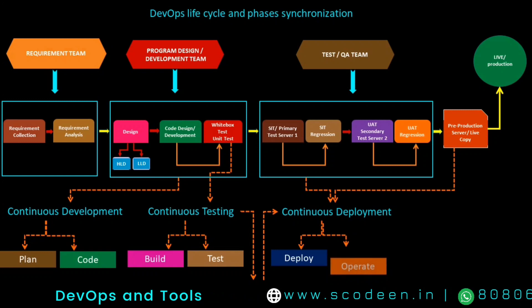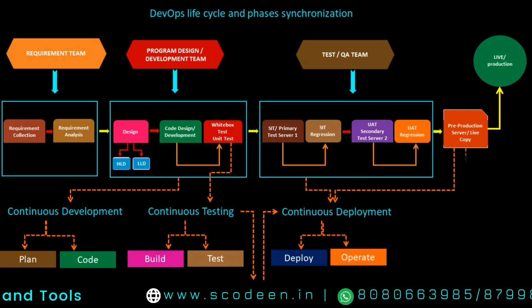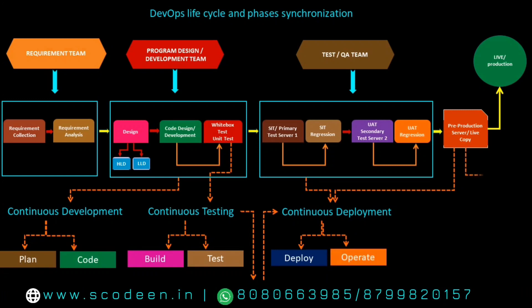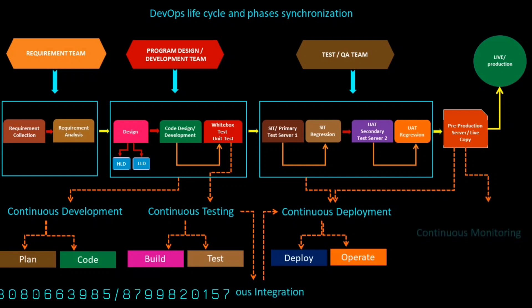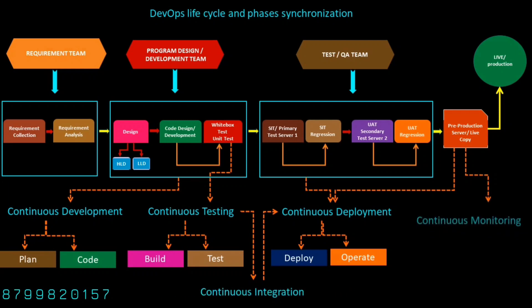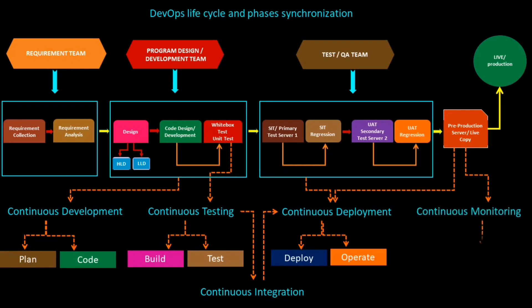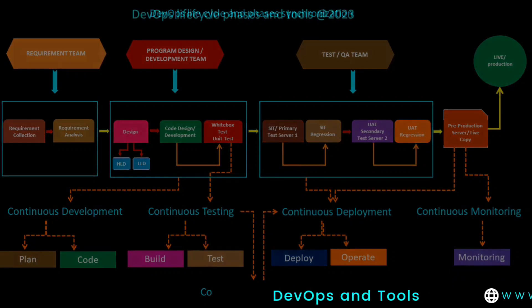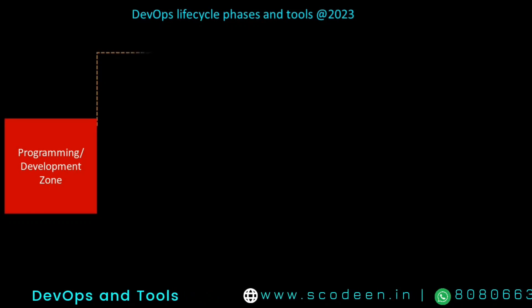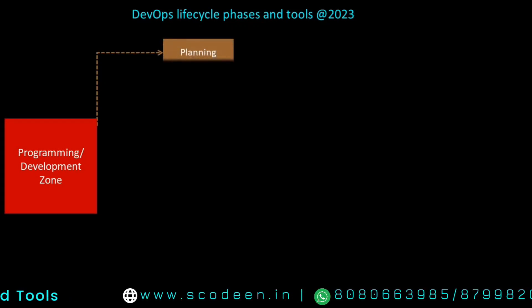These are the various phases of the development life cycle process. In the final stage, we are going to monitor the performance of our code in the production server. That process is known as Continuous Monitoring. These are the DevOps development lifecycle phases.